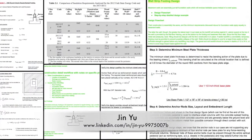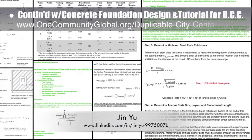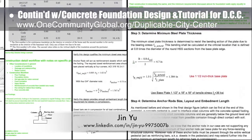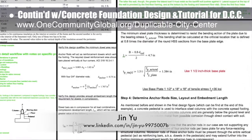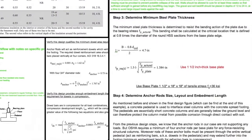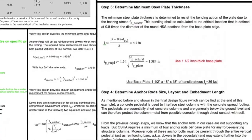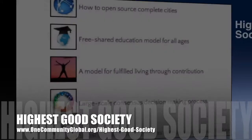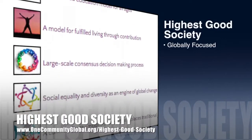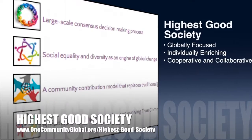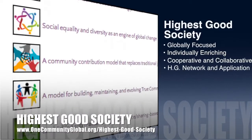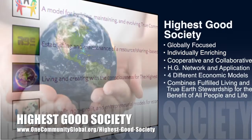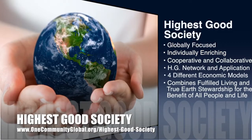Jin Yu, structural engineering designer, completed her 6th week working on the concrete foundation design and tutorial details for the duplicable city center. This week's focus was a behind-the-scenes tutorial explaining the wall strip footing design and two new MathCAD tutorials explaining the different calculations necessary for proper foundation design. One Community's approach to highest good society is globally focused, individually enriching, cooperative, and collaborative — includes a highest good network and application, four different economic models, and combines fulfilled living and true earth stewardship for the benefit of all people and all life on this planet.